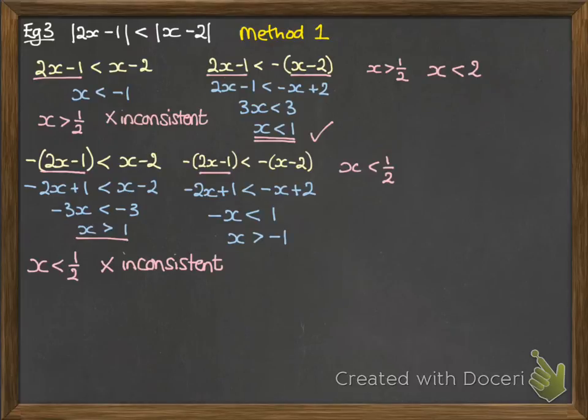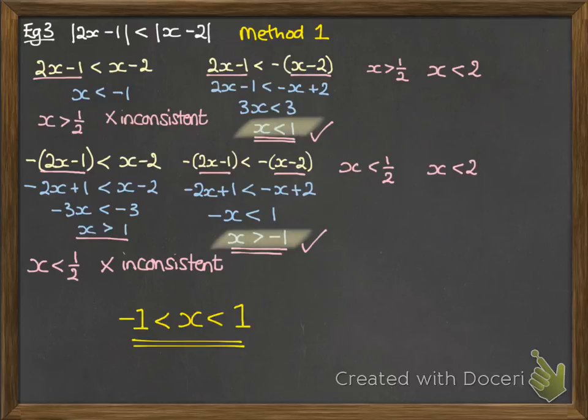And then the final one, we need 2x minus 1 to be negative, so x must be less than a half. That fits with x being more than minus 1. That's possible. And the second condition is that x minus 2 is negative, so x needs to be less than 2. That also fits with x being bigger than minus 1. So that works out fine, and we get our final solution set as being those two answers that we discovered as being consistent. We put those together to get our whole range where x can be between minus 1 and 1.